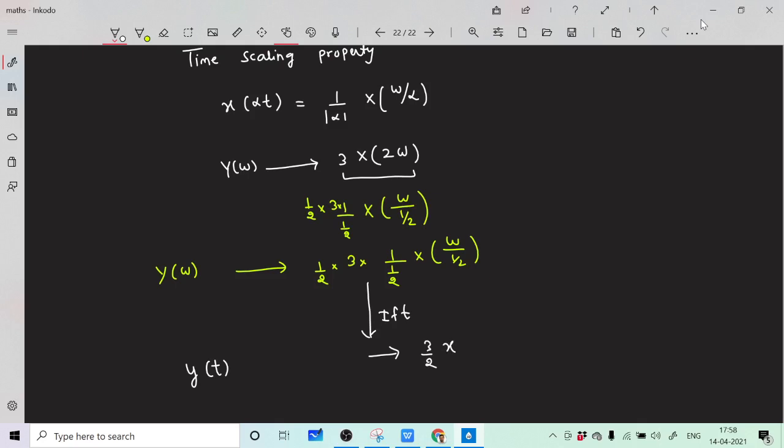It becomes x(αt) where α is 1/2, so (1/2)t. You can also write this as t/2. That's it for this problem.